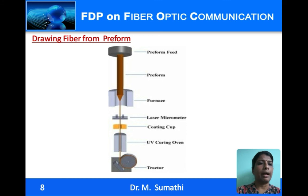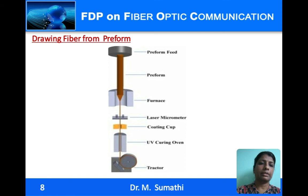The fiber that is drawn is taken up and later cabled. There are different methods for cabling the fiber and different configurations are available based on the requirement and where the cable is going to be used — whether inside buildings, underground ducts, undersea, or overhead cables. Depending on the application, the cabling configuration is chosen accordingly.